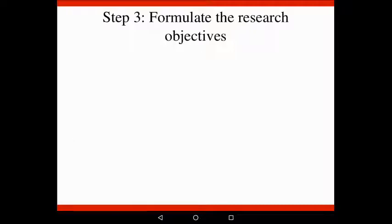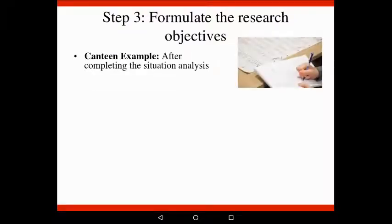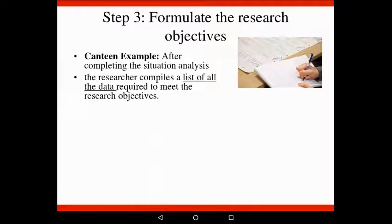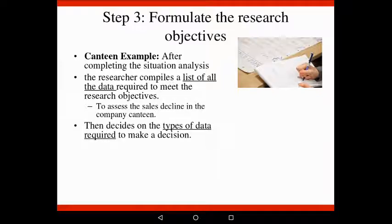In the canteen example, after completing the situation analysis, the researcher will compile a list of what data is needed in order to meet the research objectives. In order to assess the sales decline in the company canteen — that's the objective — the person will then decide on the type of information required to make that decision.